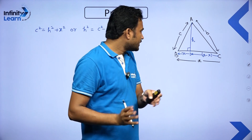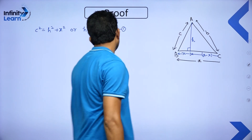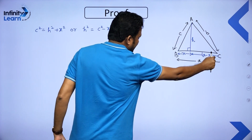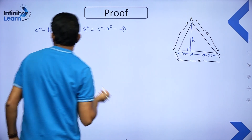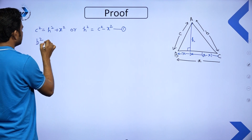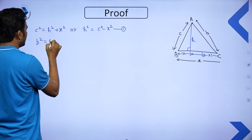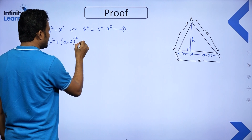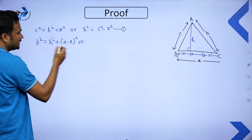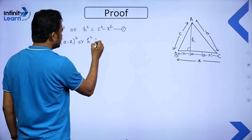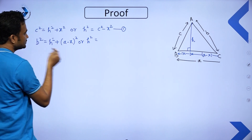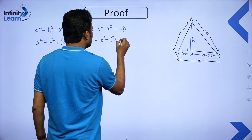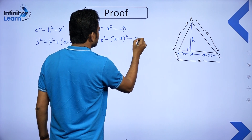Now let us apply Pythagoras' theorem in triangle ADC. The hypotenuse is B, so B² = H² + (A − X)². Rearranging, H² = B² − (A − X)². Let us call this equation 2.